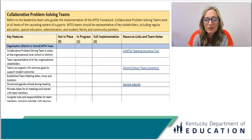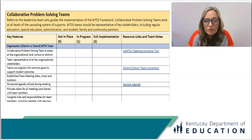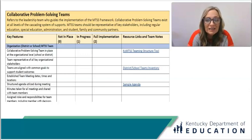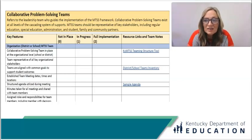Each essential element follows this format. There is the essential element in bold with a brief definition or explanation of that essential element, followed by a column of key features that are some of the key features of that particular essential element. Teams would discuss and determine not in place, in progress, or full implementation.